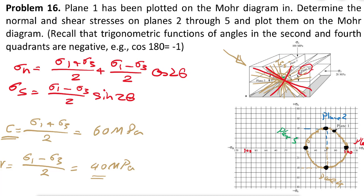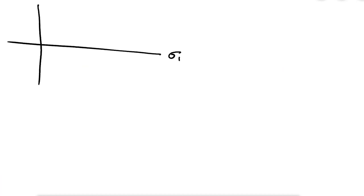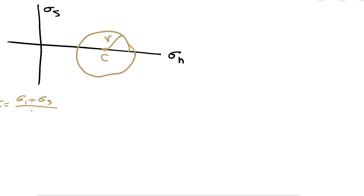When we draw the Mohr circle, we can read all the normal stresses and shear stresses in different directions of the rock. The x-axis is sigma n, the y-axis is sigma s, and on the graph we have the Mohr circle with its center C and radius R. The center C = (sigma 1 + sigma 3)/2, R = (sigma 1 - sigma 3)/2. The intersections of the circle with the sigma n axis give two points: the maximum is sigma 1 and the minimum is sigma 3.